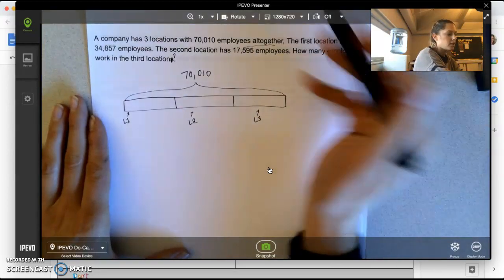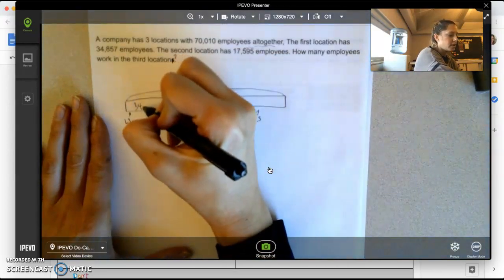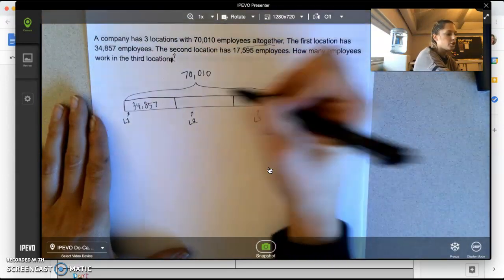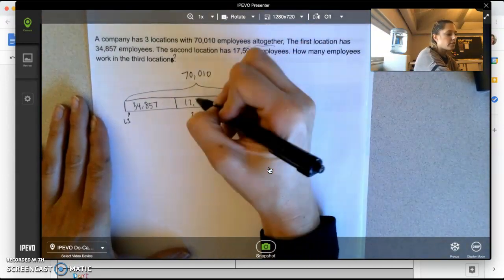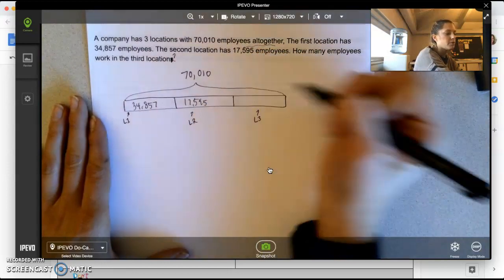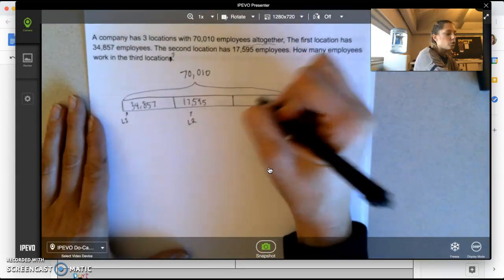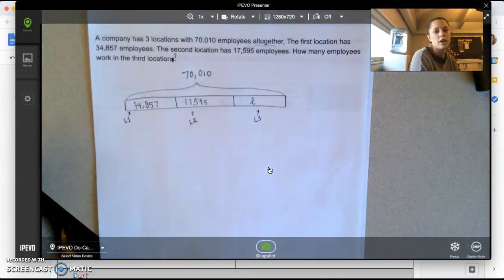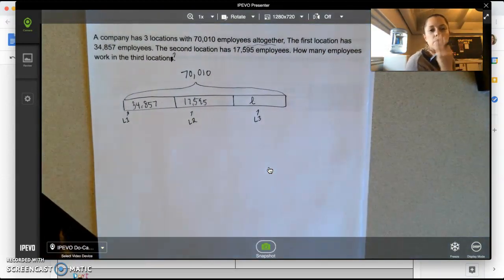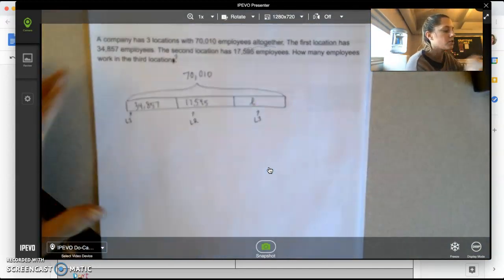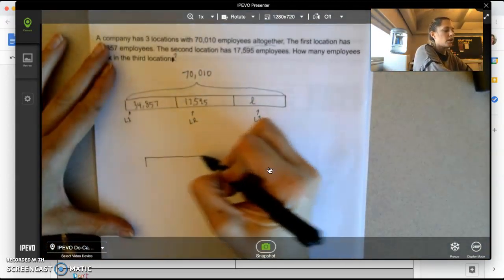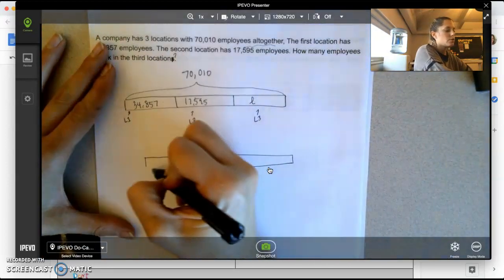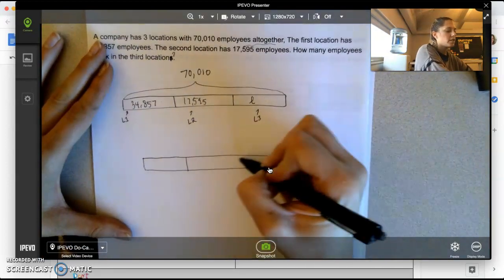I can see that there are 34,857 employees in my first location, 17,595 employees in my second location. And I don't know how many are in my third location, so I'm just going to do a cursive L there. So I know I'm trying to find about how many employees work in this third location. And I know I'm going to have to use rounding to assess for reasonableness.